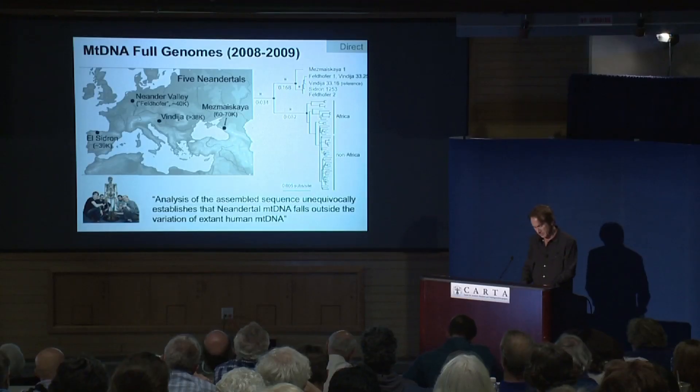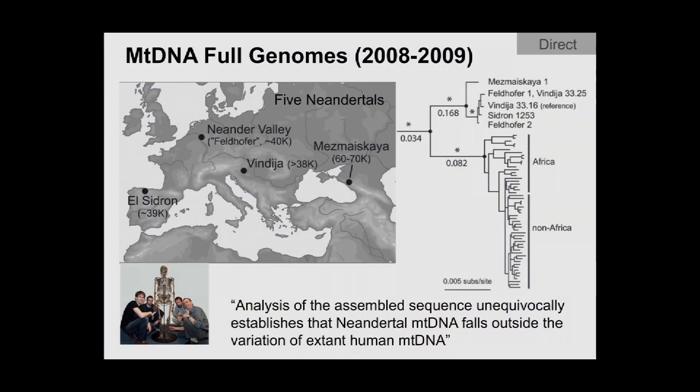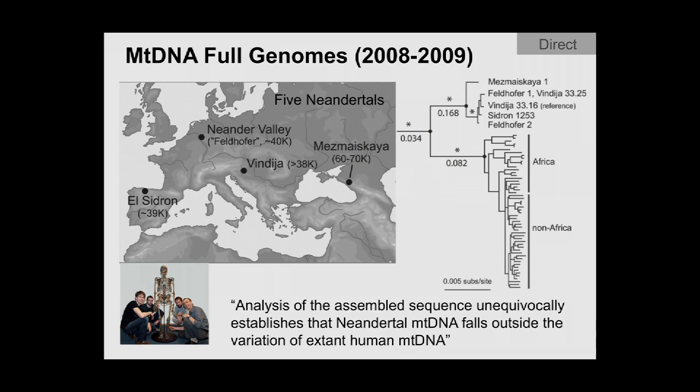Moving forward another ten years, the technology had improved, and Svante's group continued working on ancient DNA — specifically mitochondrial sequencing of the entire 16,500 nucleotides of the mitochondrial genome in five different Neanderthals. A more resolved tree showed the same pattern: Neanderthal mitochondrial DNA falling very distinctly outside variation in modern humans, unequivocally establishing that result. As of 2009, we were still talking about complete replacement with respect to mitochondrial DNA.